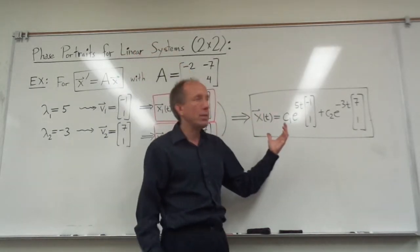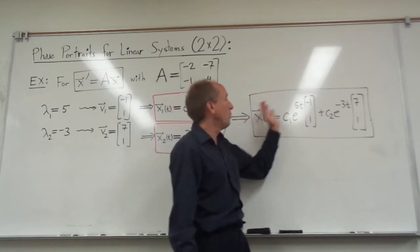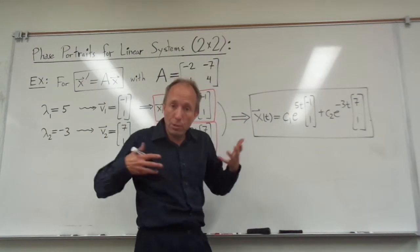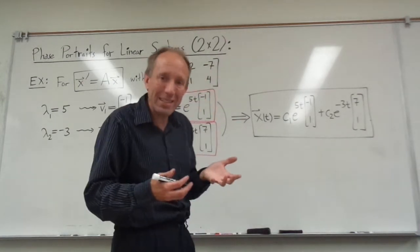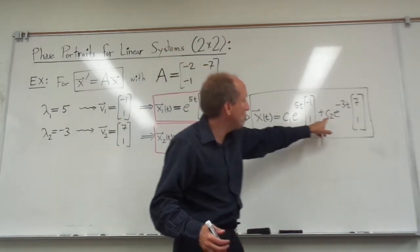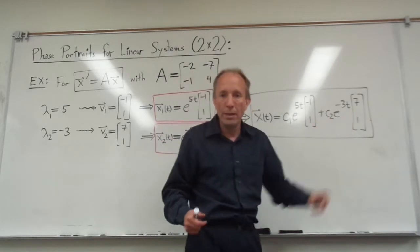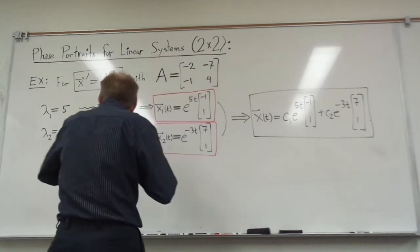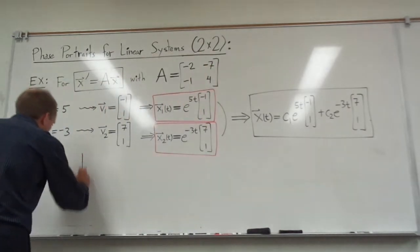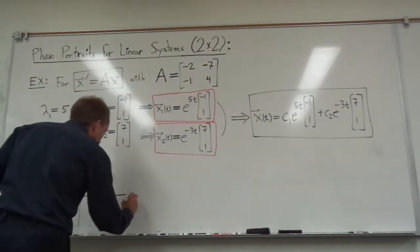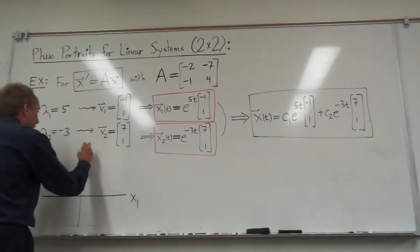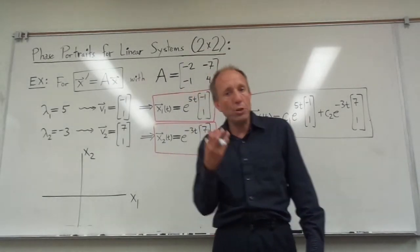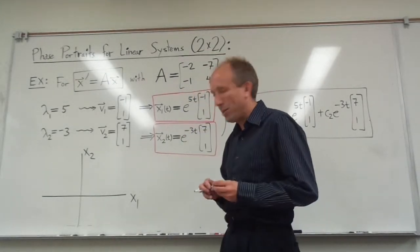I want to talk about how we can draw these solutions and understand what they really mean. The first thing to remember is that every general solution really has infinitely many solutions within it, because you can choose the numbers c1 and c2 any way that you like. So there's actually infinitely many solutions and I'm going to draw them on this x1 x2 plane and what I'm going to be drawing is called a phase portrait for the linear system.